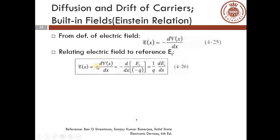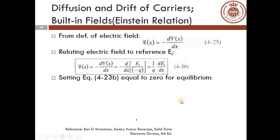Writing ε(x) = −dV(x)/dx, and since V(x) = E/(−q), using the intrinsic Fermi level EI as a reference, dV(x)/dx becomes (1/q)·dEI/dx. At equilibrium, there is no net current flow in a semiconductor. Setting equation 4.23b for hole current equal to zero at equilibrium gives: ε(x) = (Dₚ/μₚ) · (1/p(x)) · dp(x)/dx.